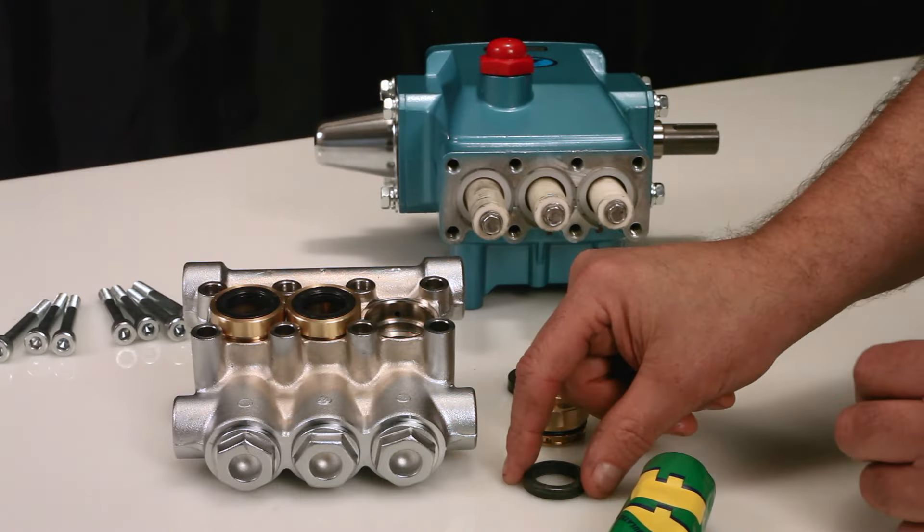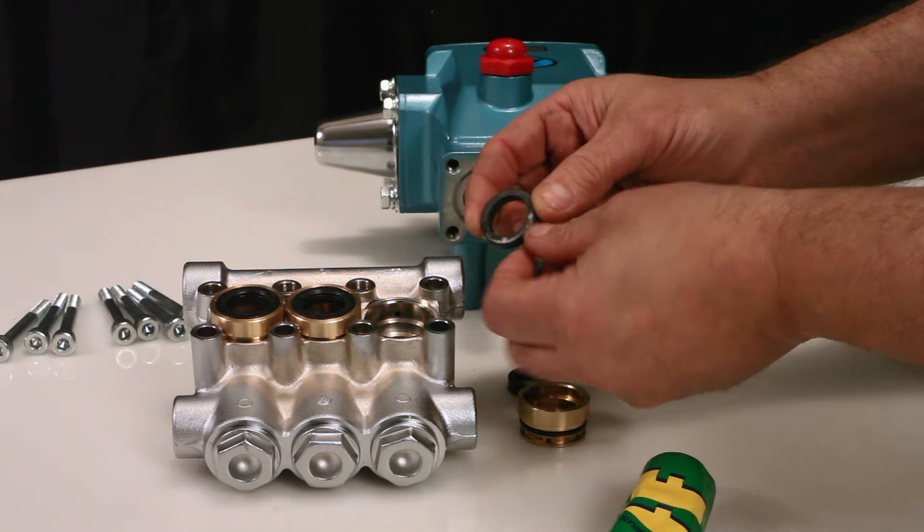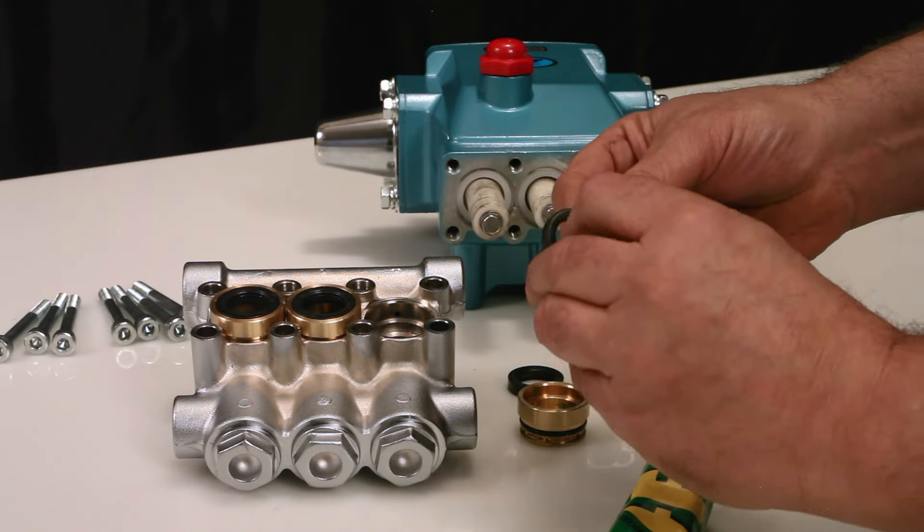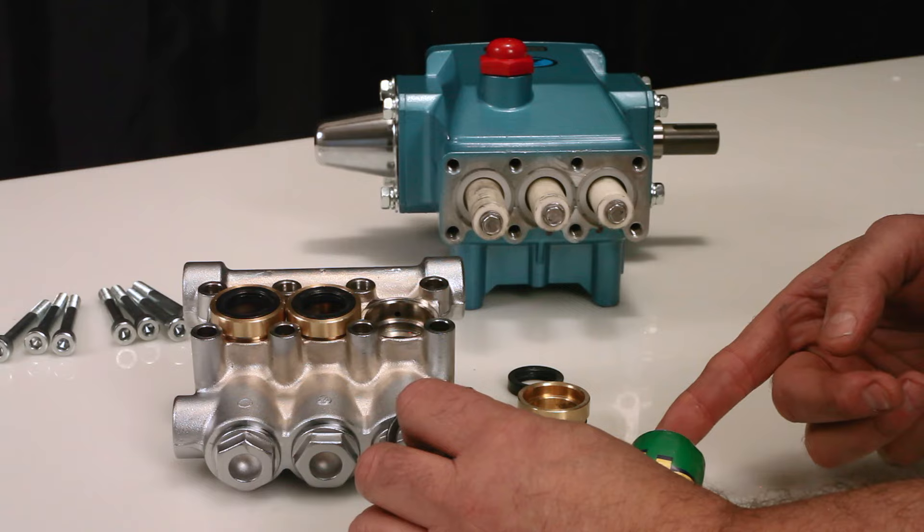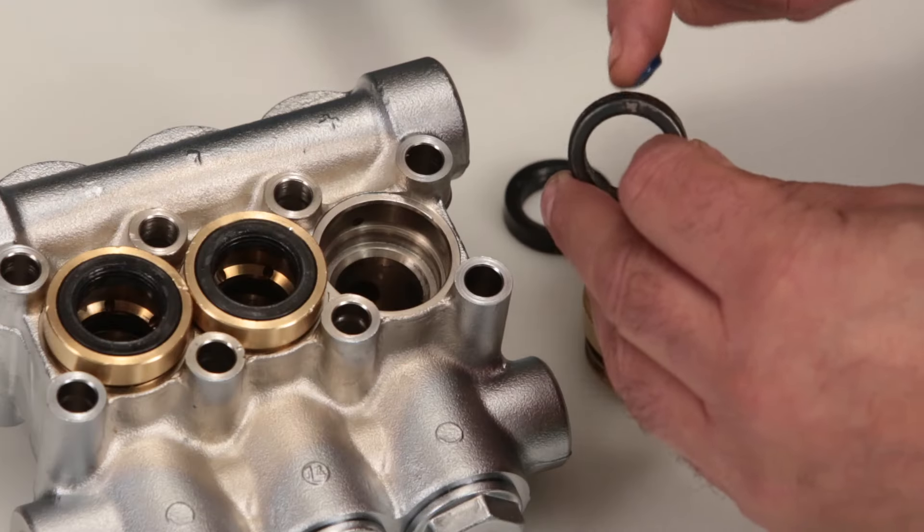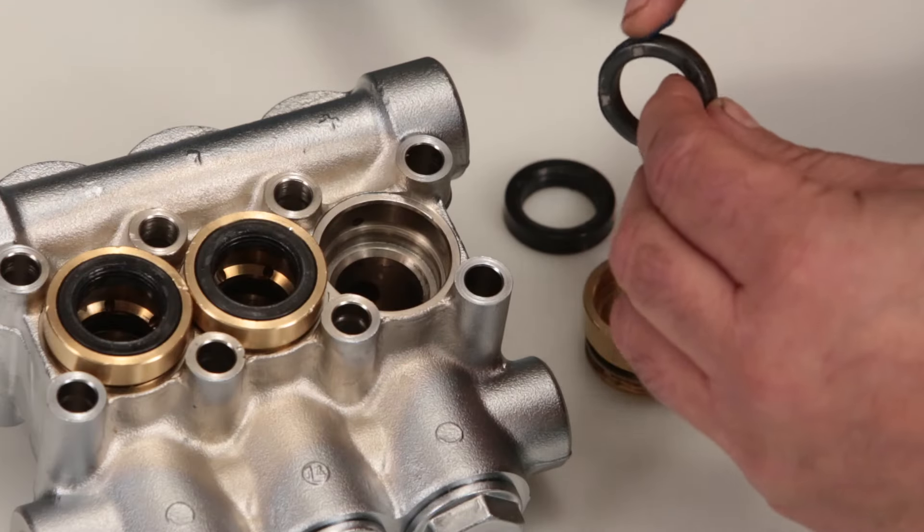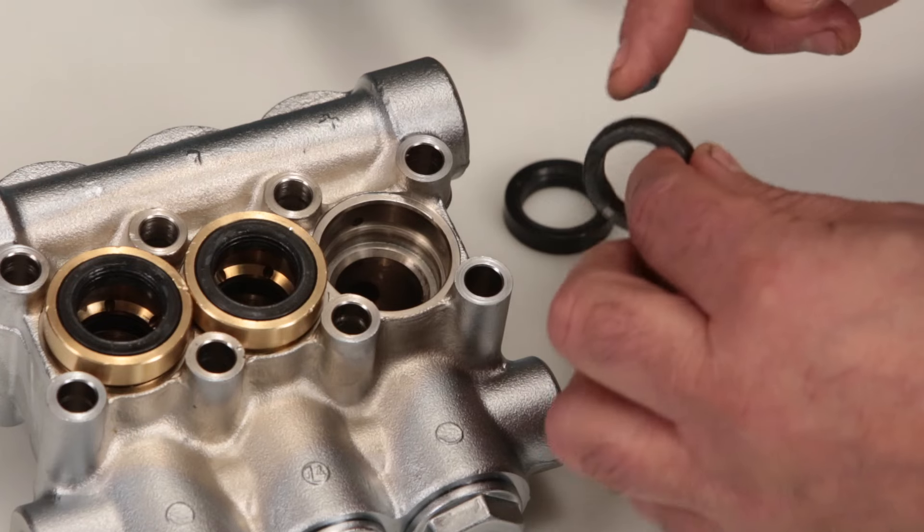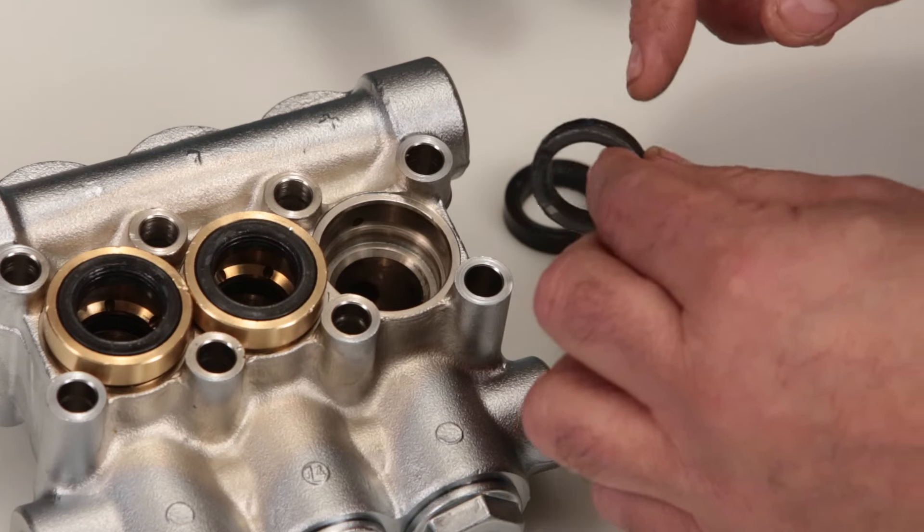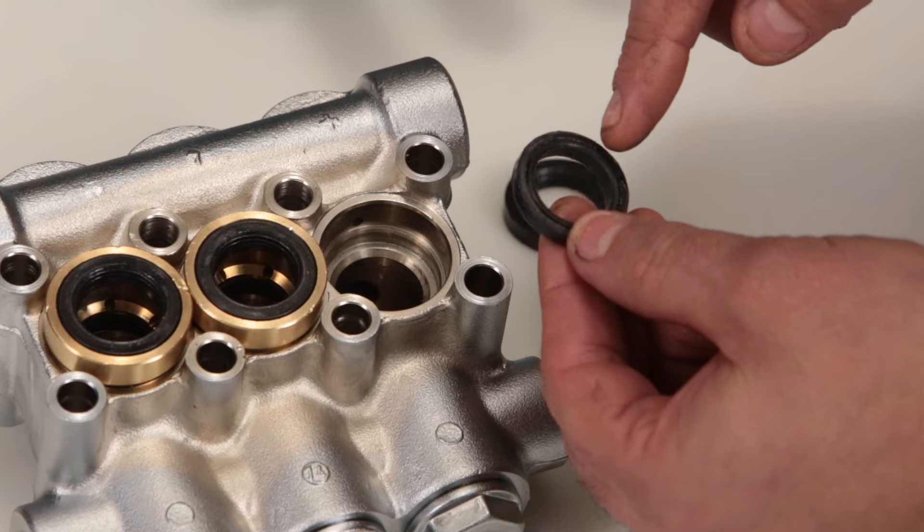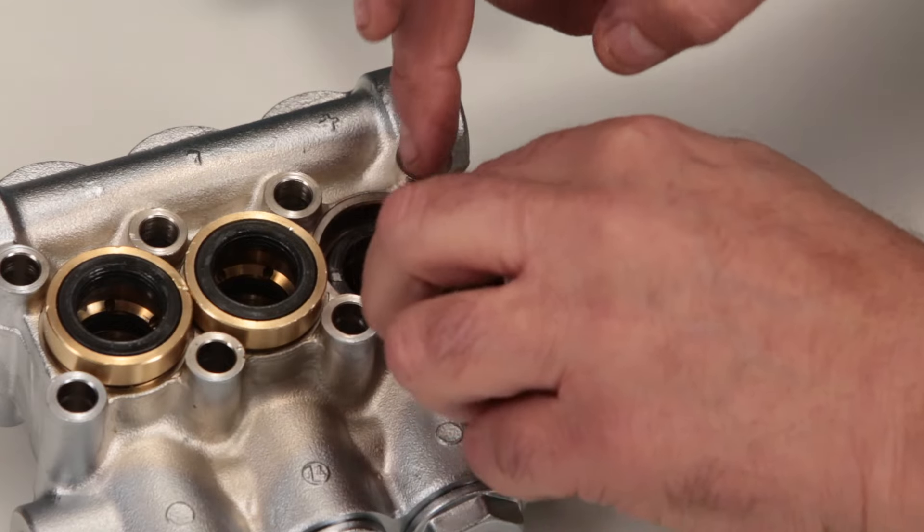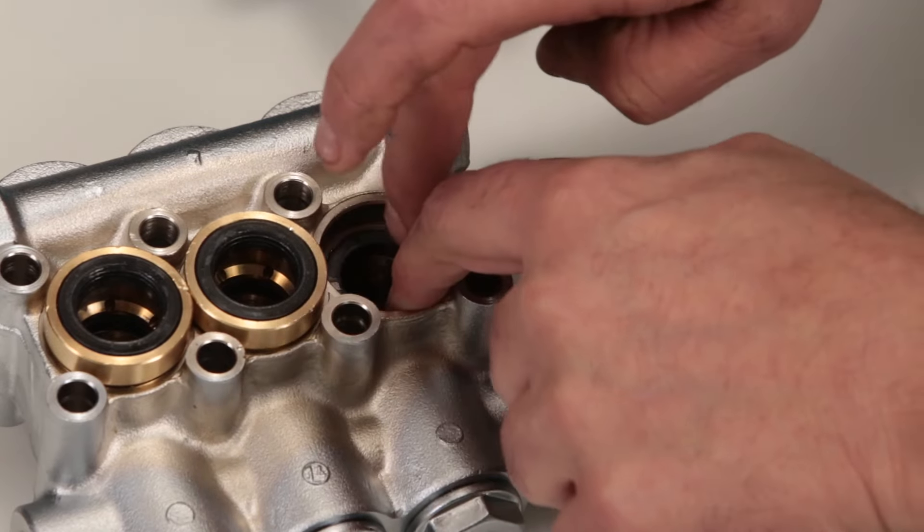To install new seals, begin with the high pressure seal. Before installing, apply a liquid gasket to the outside surface of the high pressure seal. You will notice that one side of the high pressure seal has a groove. Install with the groove side facing down and press into place.